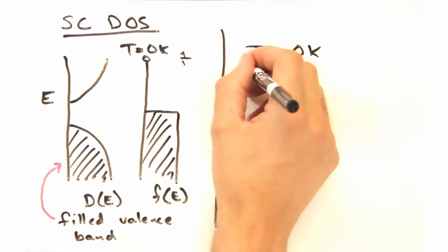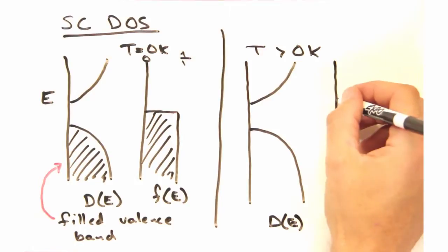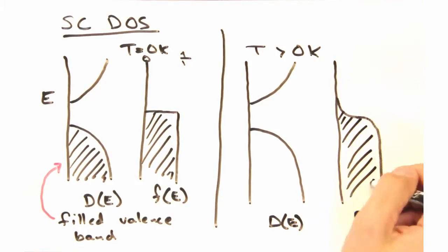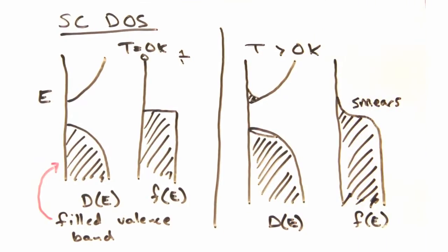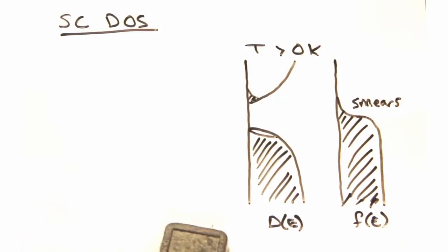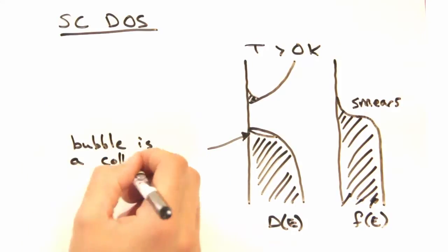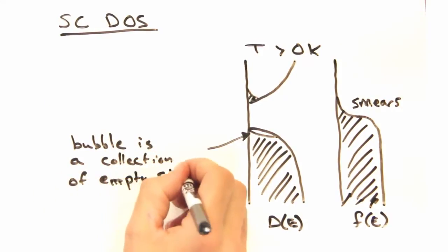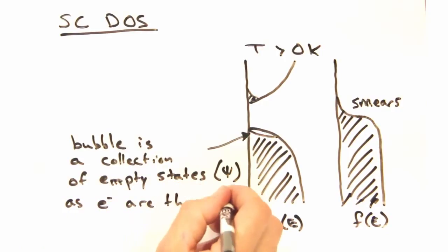Nicole, what happens as we start to increase the temperature to some finite T? Well, I know the Fermi-Dirac function will start to smear, meaning the electrons will become thermally excited into the next available state. So for a semiconductor, the electrons will jump into the next band. Seeing this in terms of the density of states, rather than band structure, is probably the simplest approach. So this bubble here is a collection of states that are now empty because the electrons got thermally excited into the conduction band? You got it.